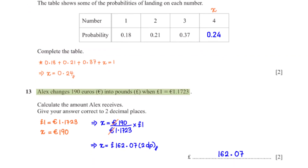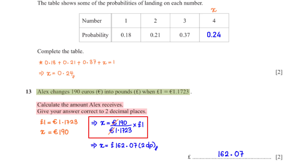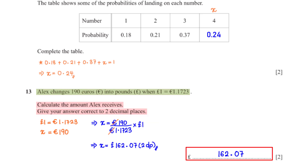Alex changes 190 euros into pounds when 1 pound equals 1.1723 euros. Calculate the amount Alex receives, correct to two decimal places. We set up the conversion ratio, cross-multiply, and make x the subject. This gives 162.07 pounds, rounded to two decimal places.